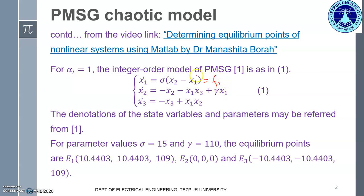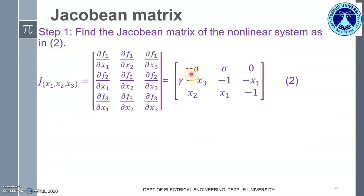If we take the partial derivative of this expression f1 with respect to x1, we get minus sigma. Again, if we take partial derivative of f1 with respect to x2, we get sigma, and with respect to x3, we get 0. That is why we get here minus sigma, sigma, and 0.